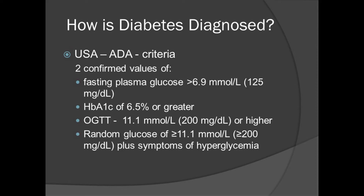In the United States, the American Diabetes Association criteria similarly require two confirmed values: a fasting glucose greater than 6.9 millimoles per liter or 125 milligrams per deciliter, an A1C of 6.5% or greater, or an oral glucose tolerance test result of 11.1 millimoles per liter or 200 milligrams per deciliter or higher. Again, these values need to be confirmed on a repeat blood test. However, if someone has a random glucose of 11.1 millimoles per liter or 200 milligrams per deciliter or greater and is symptomatic, no repeat is necessary — this person has diabetes.